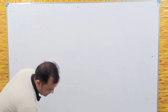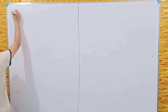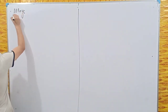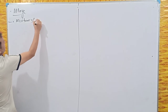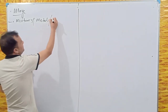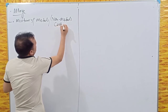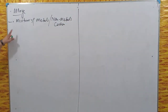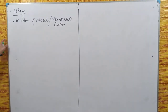Now we will discuss alloys. Alloys are basically a mixture of metals. Sometimes non-metals like carbon are also mixed in — carbon is a non-metal — but in most cases metals are mixed together, and this mixture is called an alloy. We have already seen this with carbon steel, where carbon is mixed with metals.